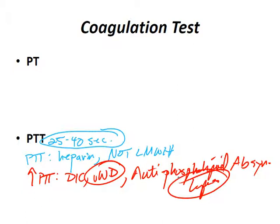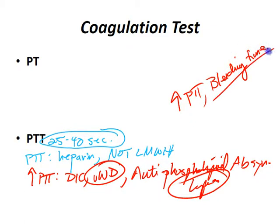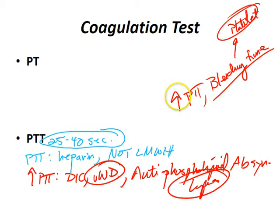If you ever see increased PTT and bleeding time, remember that's a platelet problem — you'll be bleeding from skin and mucosal surfaces. That can only be Von Willebrand's factor disease or antiphospholipid antibody syndrome. On the USMLE or COMLEX, if you see increased PTT — DIC, Von Willebrand's factor, antiphospholipid antibody syndrome, lupus — you're done.